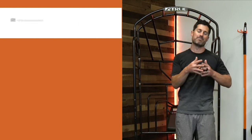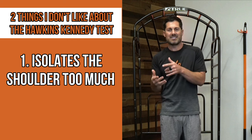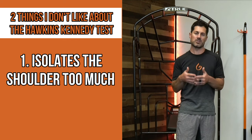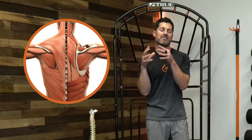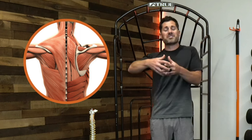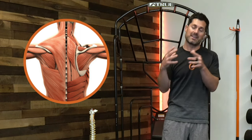The second thing that bothers me about the Hawkins-Kennedy test is it doesn't relate to what the scapula is doing in motion. You basically pin and isolate your arm against the therapist's shoulder and just go through internal rotation. The glenohumeral joint and the scapula have an amazing relationship — where the scapula goes, the glenohumeral joint gets pre-positioned. Shouldn't you test the scapula within the glenohumeral joint context? It makes sense to me.